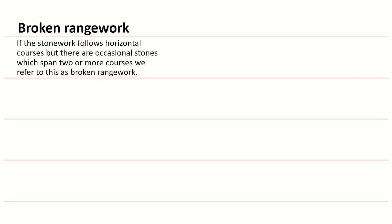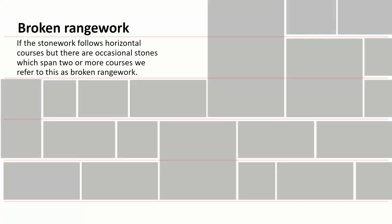If the stonework follows a horizontal course but there are occasional stones which span two or more courses we might refer to this as broken range work or broken stonework. In this example there are some larger stones which span three vertical courses or two vertical courses.